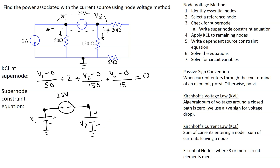Now we apply Kirchhoff's voltage law to this circuit — the direction doesn't matter. Suppose we assume this direction: going from minus to plus at v1 is a voltage rise, so we associate a negative sign with this.